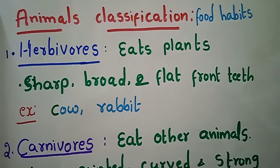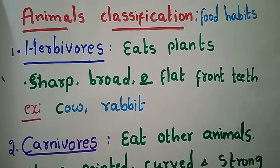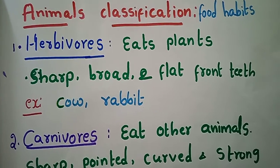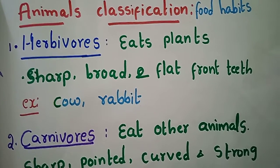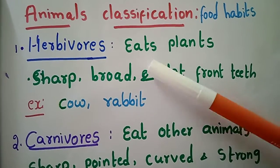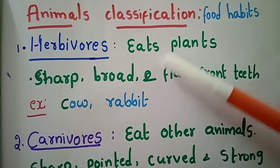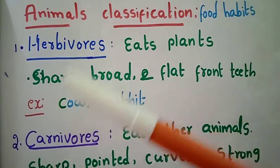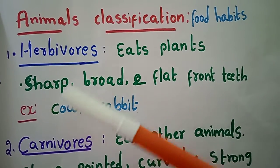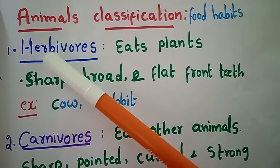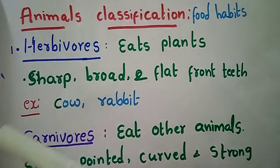So animal classification — if you observe, it will be classified as herbivore, which eats plants. Animals that eat only plants are herbivores.